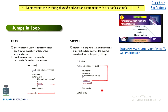The next question asks to demonstrate the working of break and continue statements with a suitable example. Give a few points on what break and continue are and where we use them, then explain the flow with a small example. When break is used, the program exits the loop and executes the next statement after the loop. When continue is used, it ignores the remaining statements in the current loop iteration and goes back to the beginning of the loop. This distinction in flow can be explained easily with a small code example.